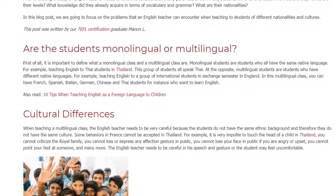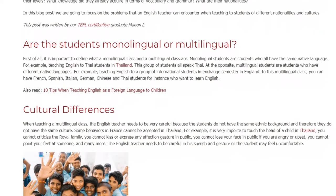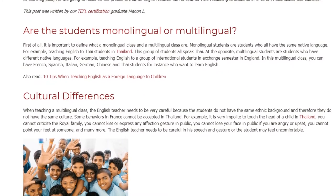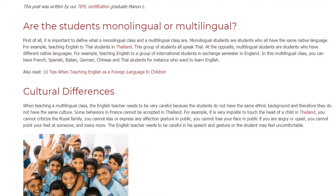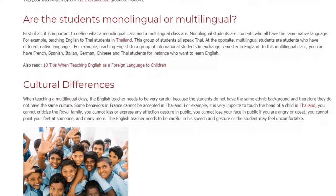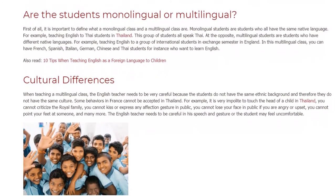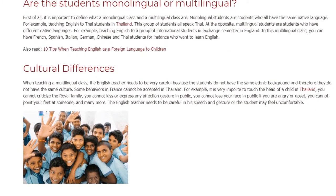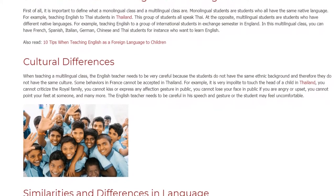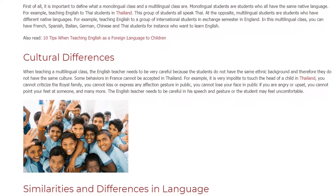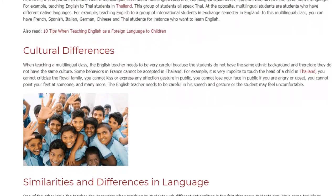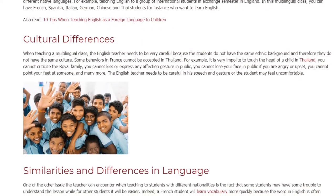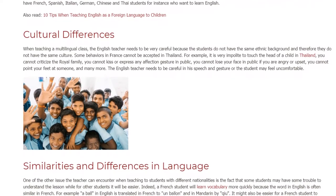Cultural Differences. When teaching a multilingual class, the English teacher needs to be very careful because the students do not have the same ethnic background and therefore do not have the same culture. Some behaviors in France cannot be accepted in Thailand. For example, it is very impolite to touch the head of a child in Thailand. You cannot criticize the royal family. You cannot kiss or express any affection gesture in public. You cannot lose face in public if you are angry or upset. You cannot point your feet at someone, and many more.